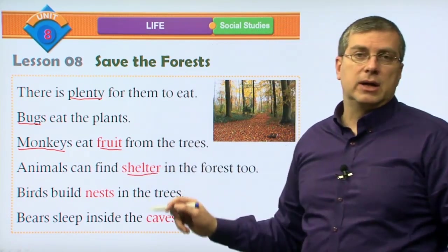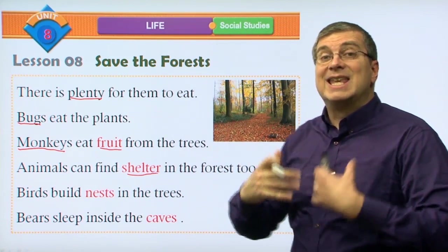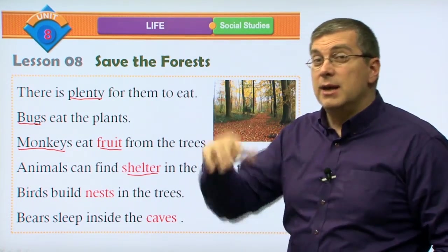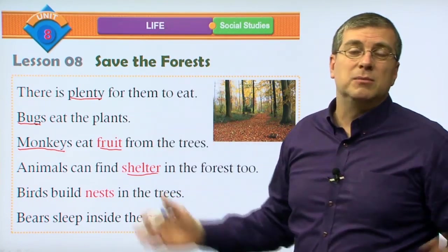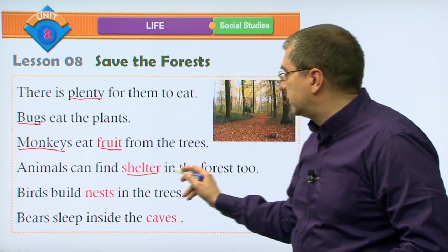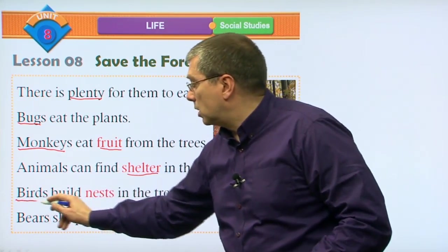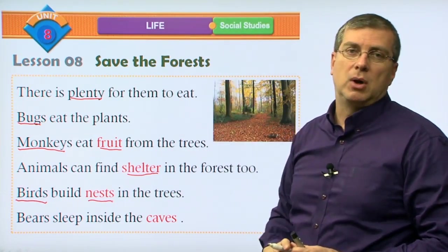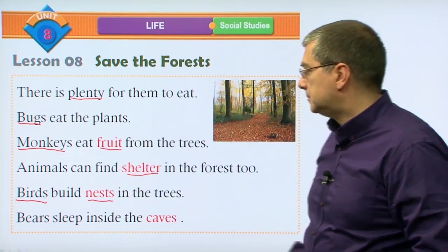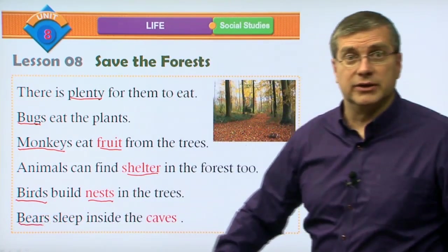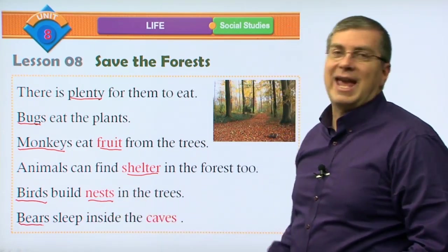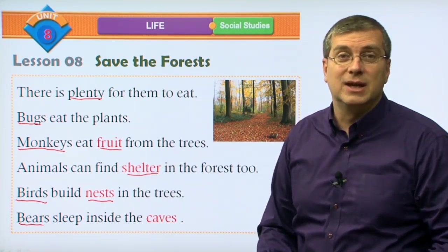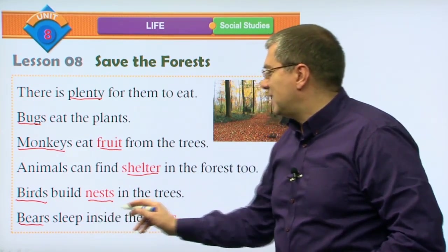Animals can find shelter - this is very important. Forests and trees give shelter to animals. Animals will find shelter in the trees, make a little shelter inside the tree, and make nests on top of the tree. Of course, a cave can be anywhere, but sometimes there are caves in the forest. Birds build nests very high up in the tree so other animals can't get to them. Bears sleep inside the caves - if there's a cave in the forest, maybe there's a bear in there. Be careful about going into caves without an adult.